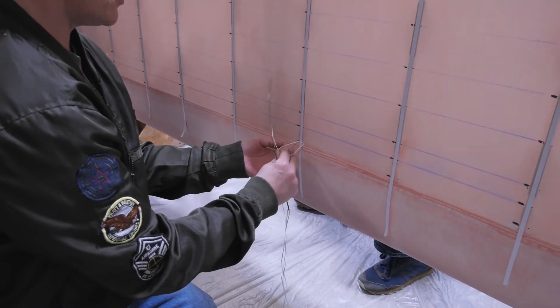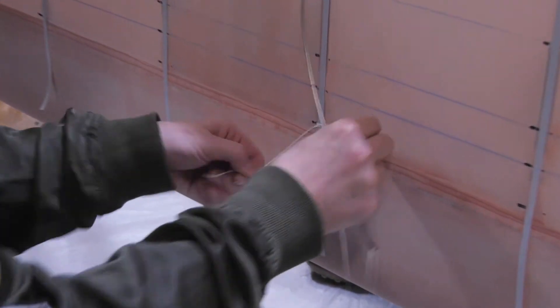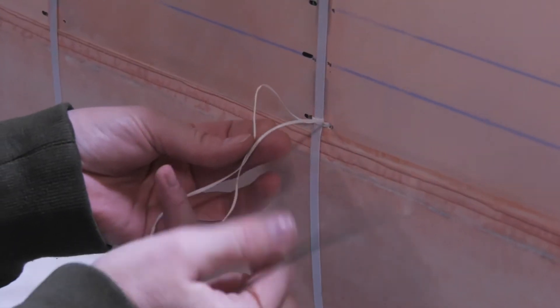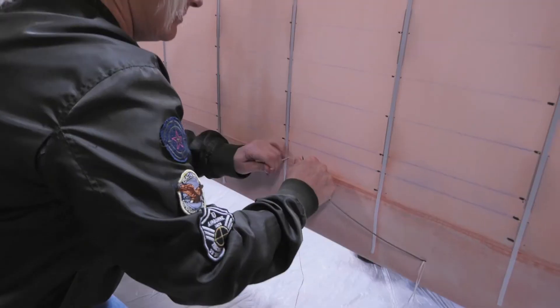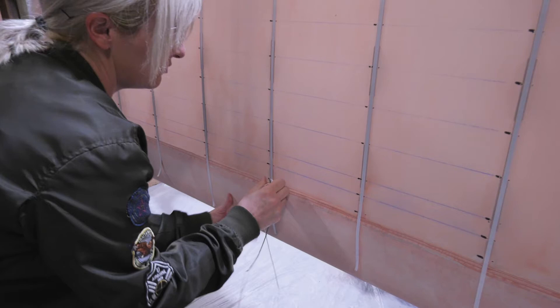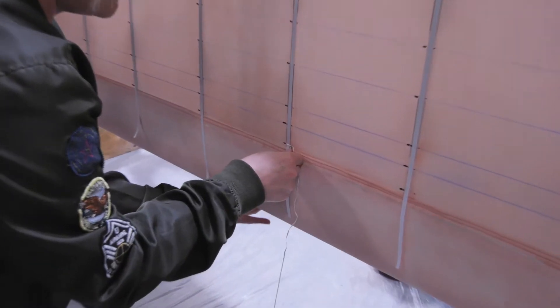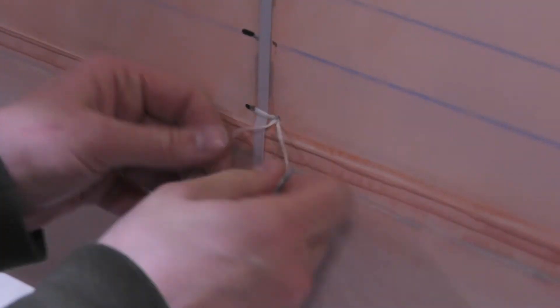Then here we do a square knot. Come in from the top, come in from the bottom, pull it tight. Pull it over so that it'll fall into the hole and disappear into the hole.